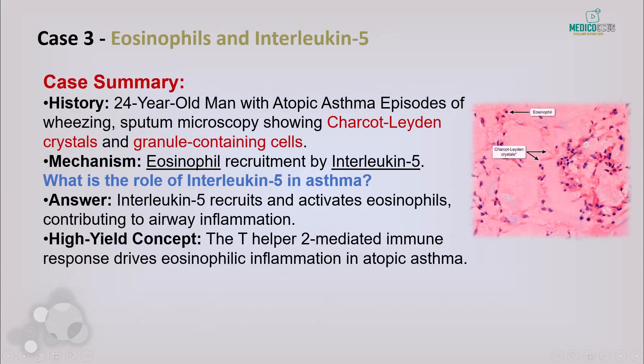Case 3: A 24-year-old man with paroxysmal breathlessness and wheezing. His history of childhood eczema raises suspicion of atopic or extrinsic asthma, often seen in genetically predisposed individuals. Key finding: eosinophils and Charcot-Leyden crystals in the sputum. These cells are recruited and activated by interleukin-5, a cytokine secreted by T helper 2 cells. Interleukin-5 plays a critical role in eosinophil recruitment in the bronchial mucosa, contributing to airway inflammation and hyper-responsiveness — a high-yield concept for the exam.